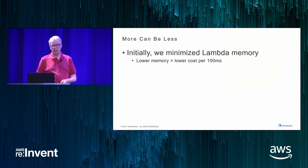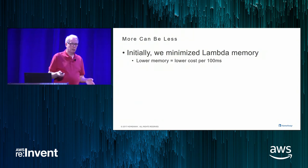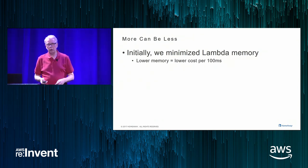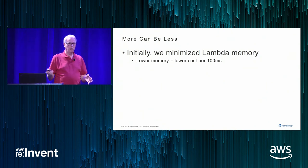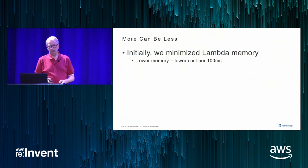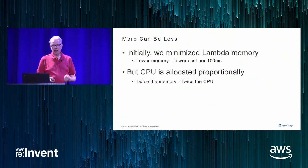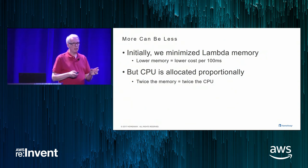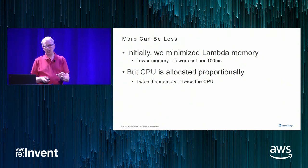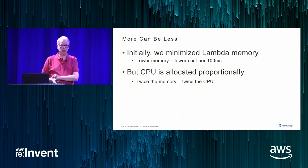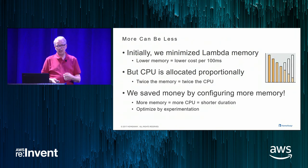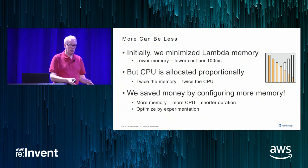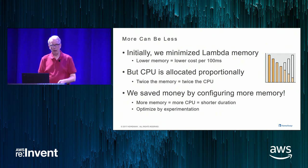This is counterintuitive. Initially we thought: to manipulate a 6,000 by 4,000 pixel image, a 500-megabyte Lambda is fine and cheaper. But the only parameter you control when configuring a Lambda is how much memory it gets, and CPU is allocated proportionally — double the memory, double the CPU. It turned out we saved money by increasing the memory configured for our Lambdas. We didn't need that much memory, but the extra CPU power meant the job ran in less time and so we paid less.